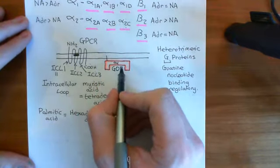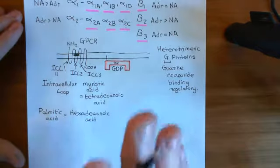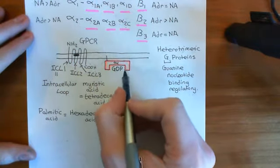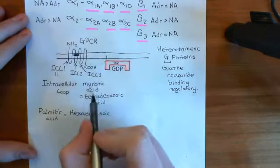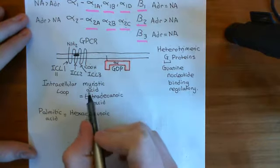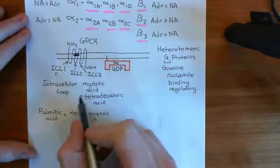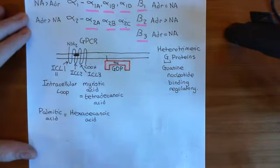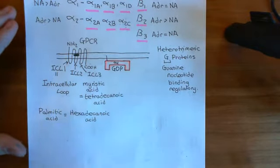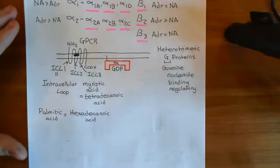Every single alpha subunit — and there are 21 different types — gets at least one lipid group attached. It either gets a myristic acid or a palmitic acid molecule stuck on, and some even get both. This is the reason the alpha subunit is attached to the inner leaflet rather than floating in the cytoplasm, and it's critical so it can interact with the GPCR.